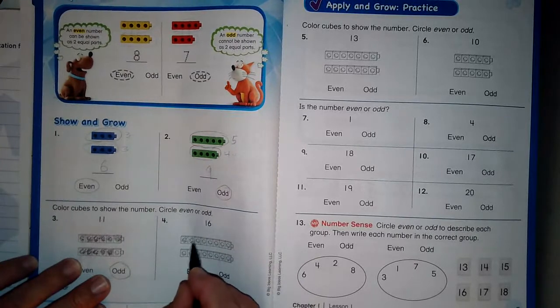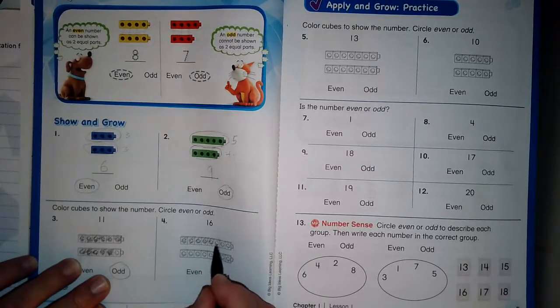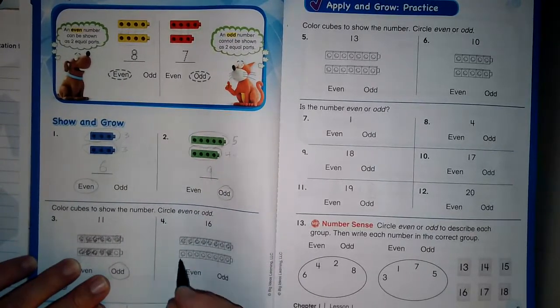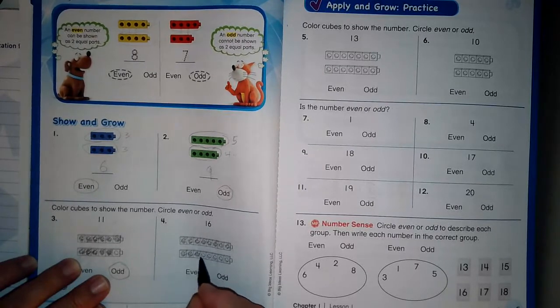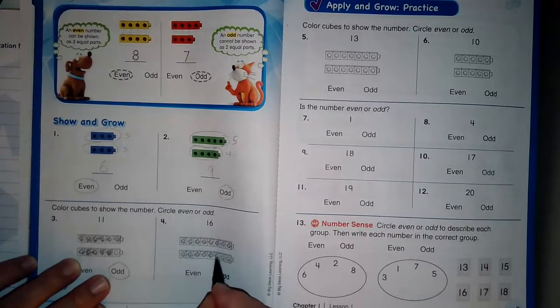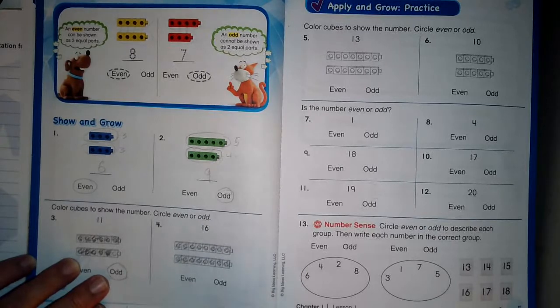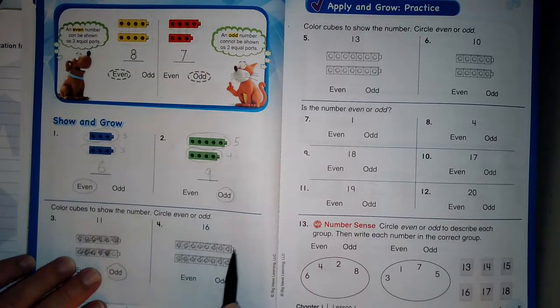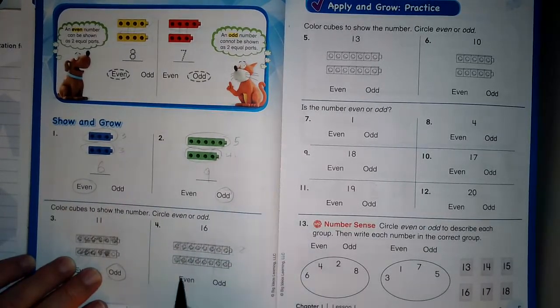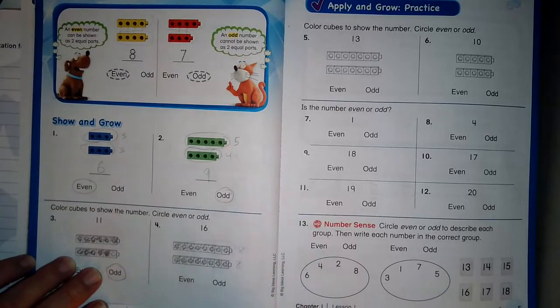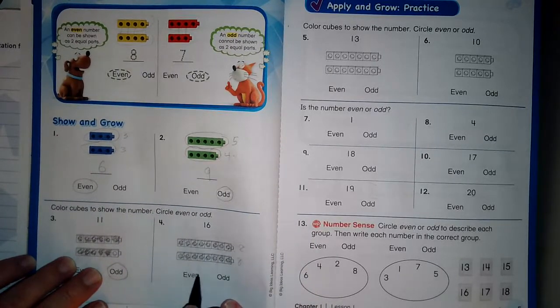Let's do sixteen. One, two, three, four, five, six, seven, eight, nine, ten, eleven, twelve, thirteen, fourteen, fifteen, sixteen. There are eight in the top group and eight in the bottom group. They are equal, so it's an even number.